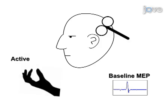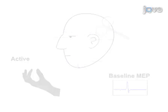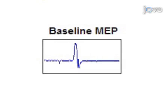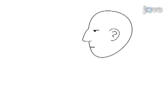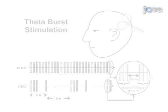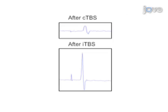The second step of the procedure is to obtain baseline corticospinal excitability. The third step is to apply theta burst stimulation. The final step is to evaluate resultant corticospinal excitability.